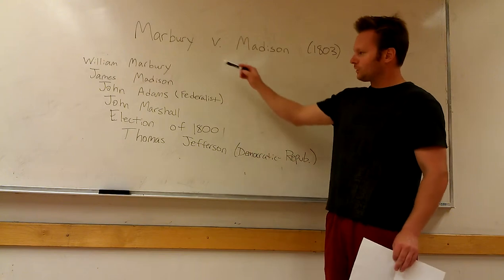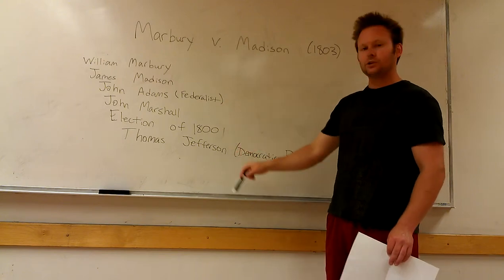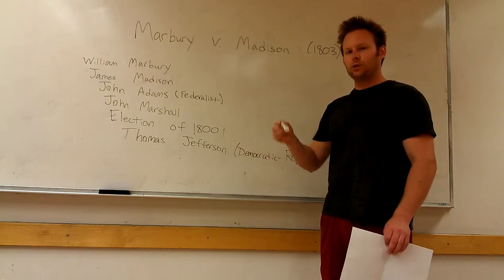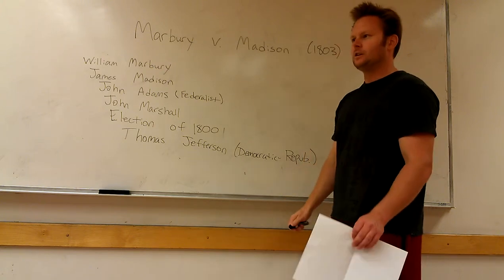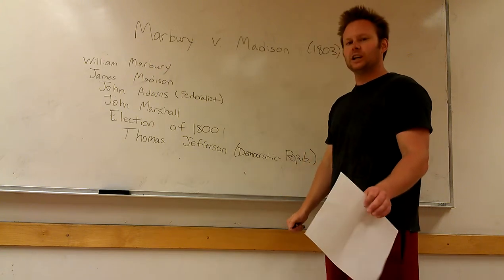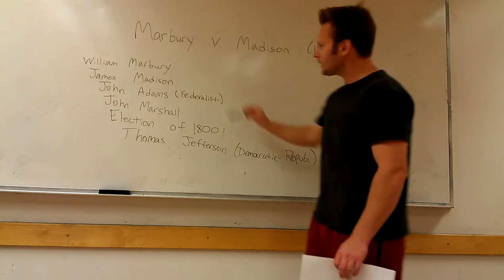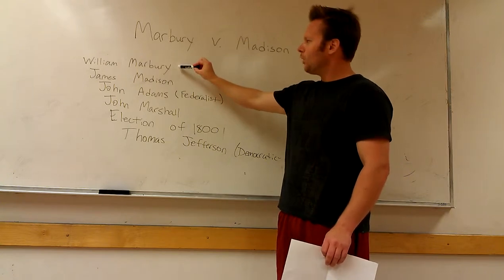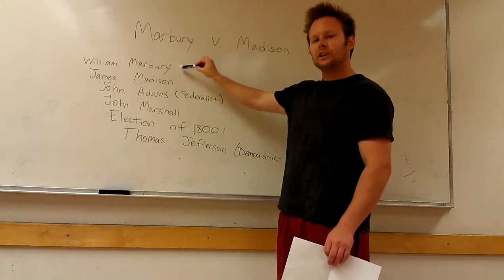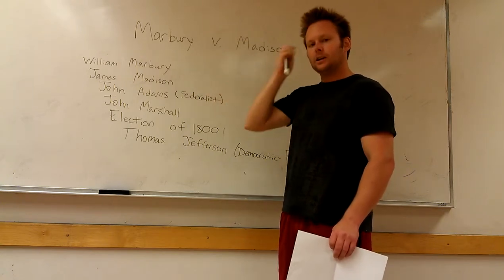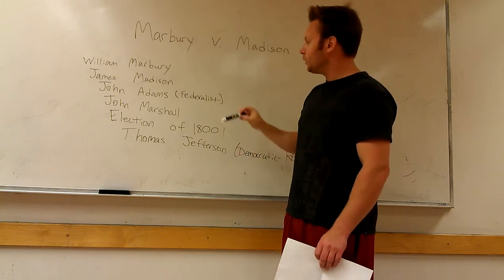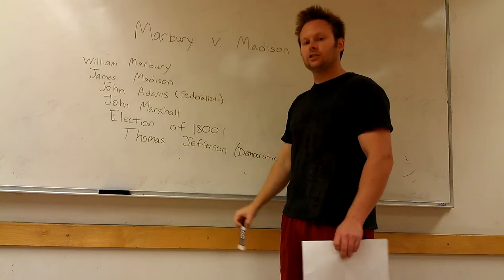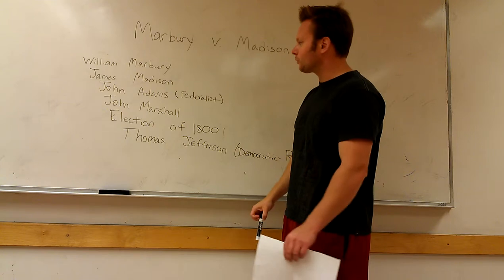First things first, I'm going to go over this list of names and terms to try to give you a primer before I actually go over a lot of the actual case itself. William Marbury was given a commission by the outgoing administration, John Adams, to be the Justice of the Peace in the District of Columbia.